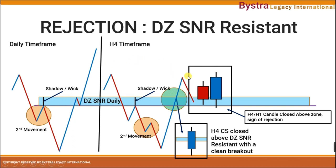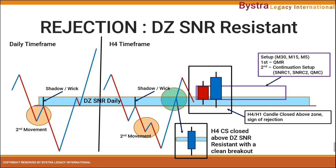When price comes back to this area to test as a new support, the confirmation time frames we need to look at are H4 and H1. The candle needs to close above the zone for the confirmation of rejection. Then we go to the smaller time frame to look for setup — if this is H4, we look for setup on H1 and below; if H1 confirmation, we look at M30 and below.